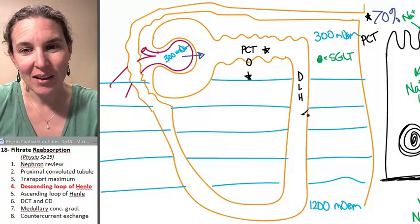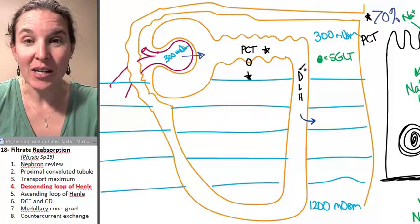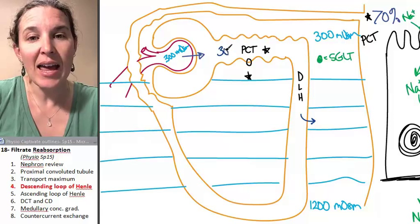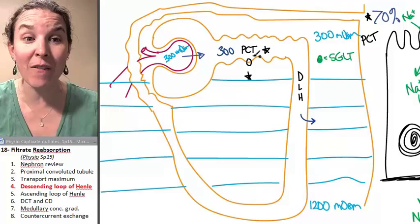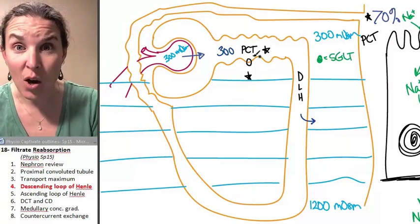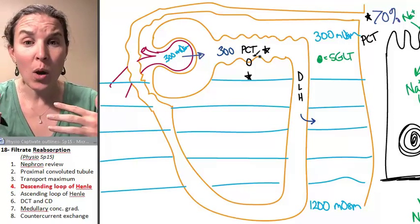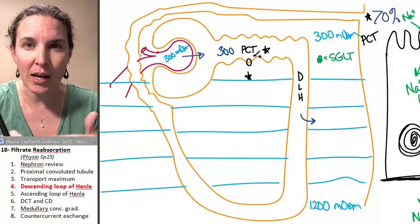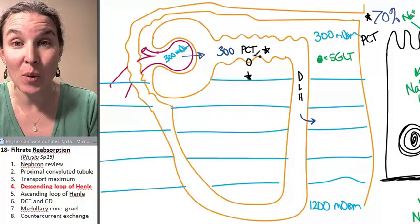Water is going to come out. Now in the proximal convoluted tubule, the filtrate ends up being isosmotic to the interstitial fluid, because if it wasn't, water would leave or solutes would leave, which would make water leave. Because solutes and water can come out at the proximal convoluted tubule, the filtrate is isosmotic at that point.